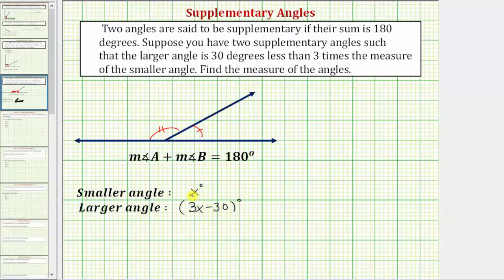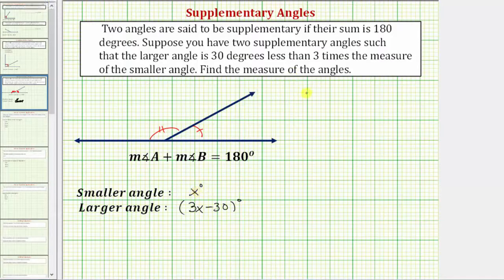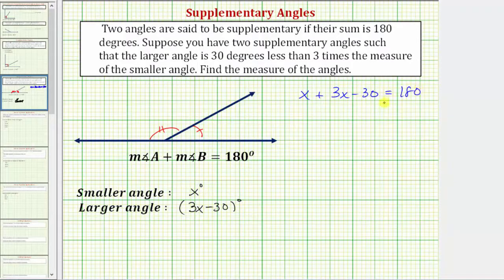Because the angles are supplementary, we can write our equation, solve for x, then determine the measure of both angles. Leaving the units off, the equation would be x plus 3x minus 30 must equal 180, again because the two angles are supplementary.